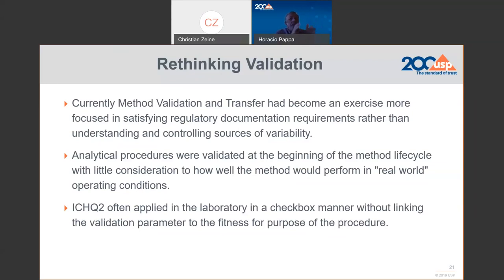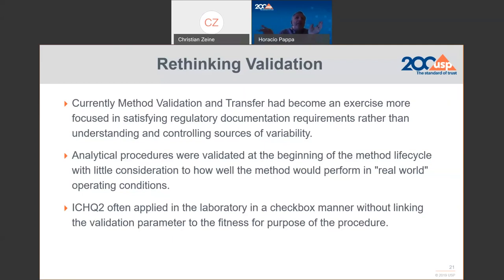ICH Q2 was often applied in the laboratory in a checkbox manner without linking the validation parameters to the fitness for purpose of the procedure. Key topics here: first, we know we have to validate because it's a regulatory requirement, but we are usually following ICH Q2 without linking method variability to the fitness for purpose of the method. Second, when we validate the method once in the lifetime, there is little consideration about how the method will shift through the lifecycle.